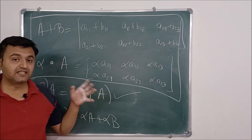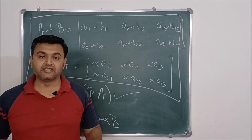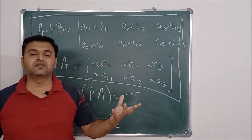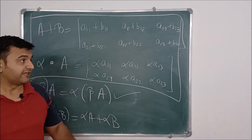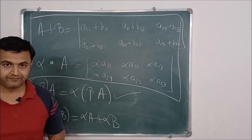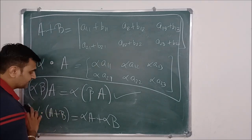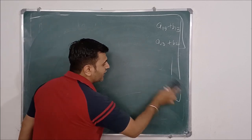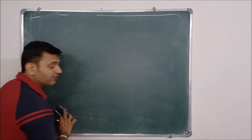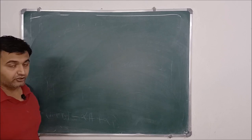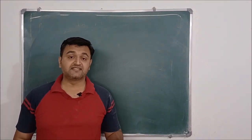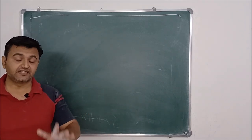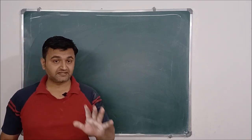Therefore, under the standard scalar multiplication — multiplying each entry by α — together with the standard component-wise addition, the given set of 2×3 matrices forms a vector space. These are called the standard addition and scalar multiplication operations. Your job is to check whether all properties are satisfied; if even one property fails, the set does not have a vector space structure.